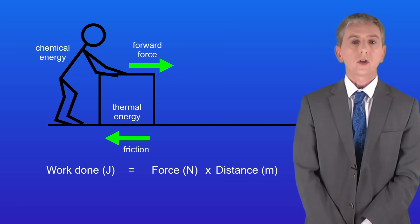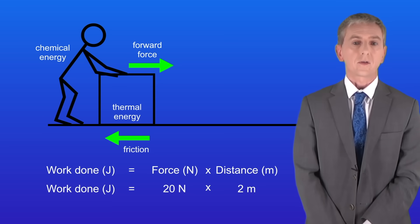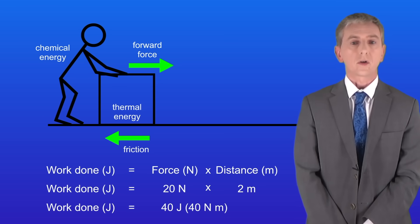Okay remember that work done equals the force multiplied by the distance. In this case the force is 20 newtons and the distance is 2 meters. Multiplying these together gives us a work done of 40 joules or 40 newton meters.